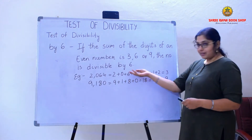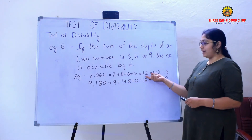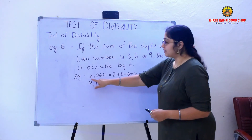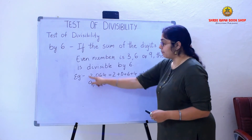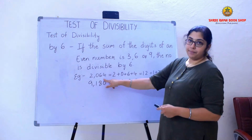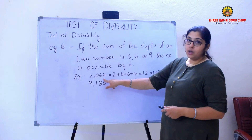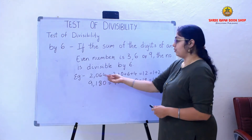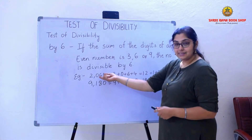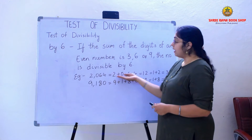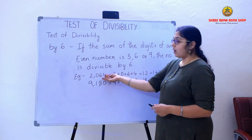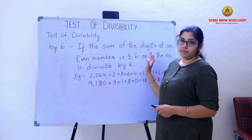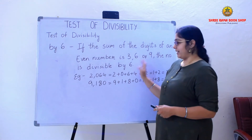When I add all the digits, I am getting 12. And children, you need to observe that this number is an even number, not an odd number. That is the reason I am going to add all the digits. If it is an odd number, I am not going to do it because it is not divisible by 6 directly.